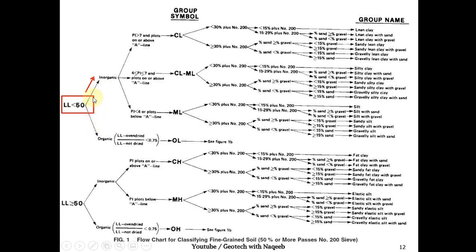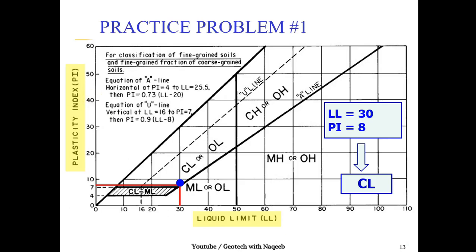Since the liquid limit is less than 50, we select the low liquid limit chart. This is an inorganic soil, which can be verified by chemical analysis or the Casagrande chart. Plotting plasticity index of 8 against liquid limit of 30 on the chart, we find this point lies above the A-line. If the point lies above the A-line and the soil is inorganic, the soil type is clay.